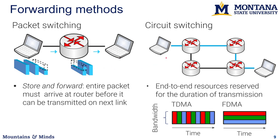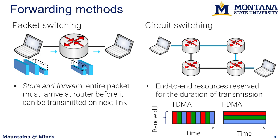When dividing bandwidth on a link, common methods are TDMA — time division multiple access — where each flow gets a chunk of time to transmit, or FDMA — frequency division multiple access — where each flow gets a frequency. An analogy: two people speaking simultaneously, one in a high voice and one in a low voice — if you pay attention you can distinguish both without them colliding.